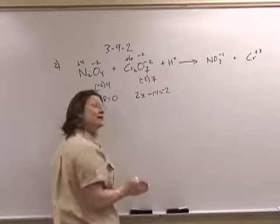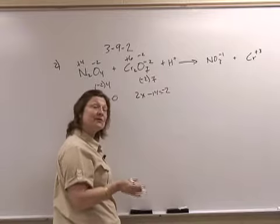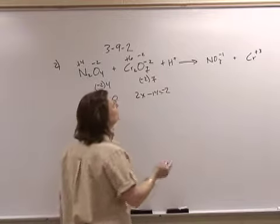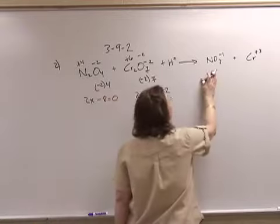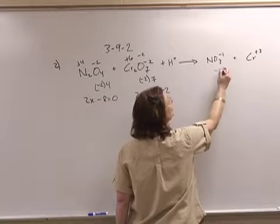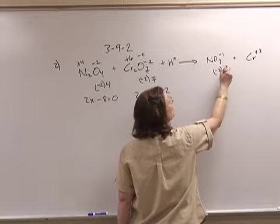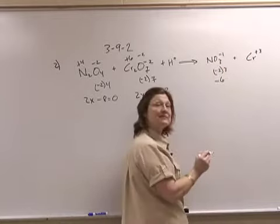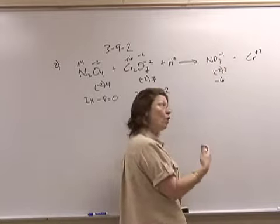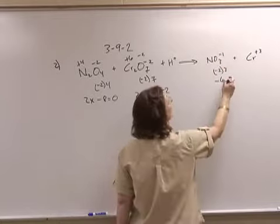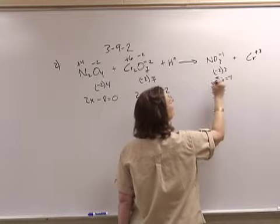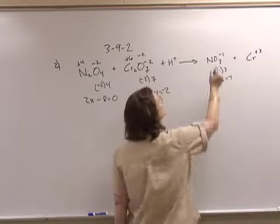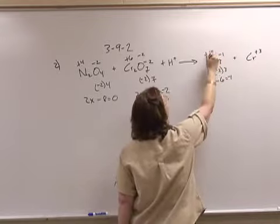The hydrogen is here to indicate that we are in an acidic solution. In nitrate, oxygen is negative 2; there are 3 of them giving me a negative 6, and the whole polyatomic ion has a negative 1 charge. Therefore nitrogen is plus 5, and chromium is plus 3.